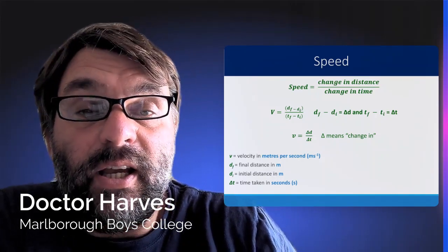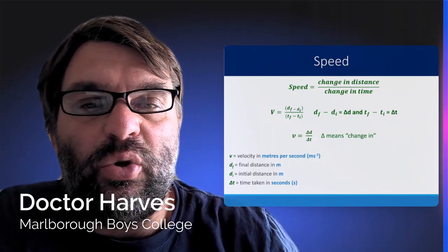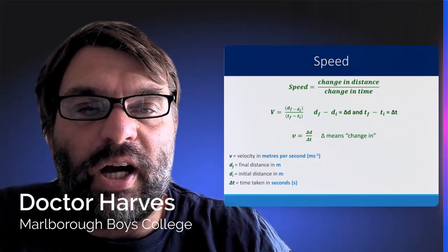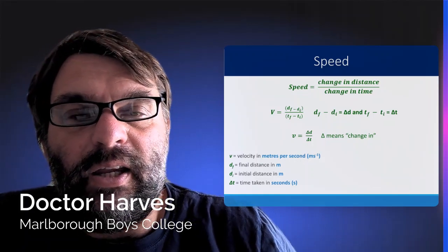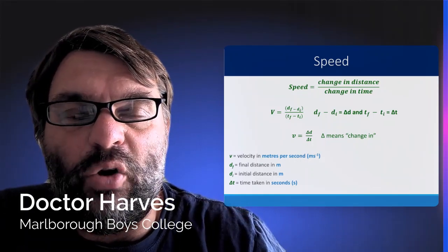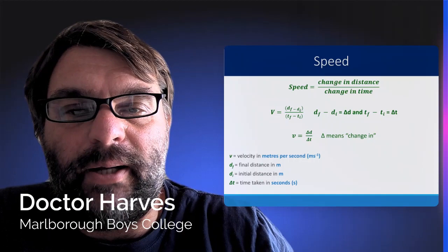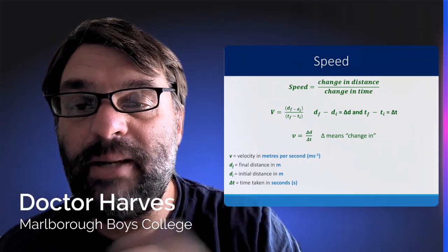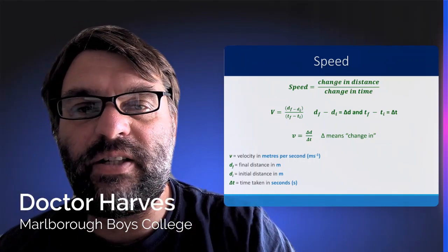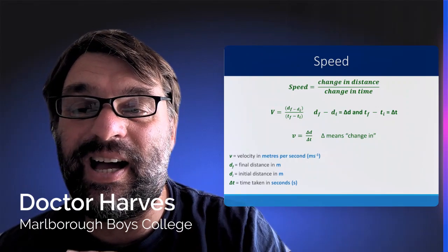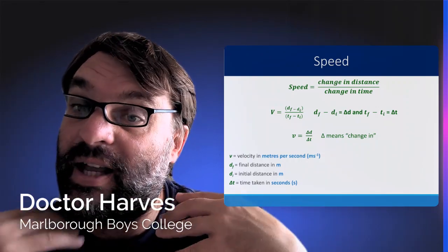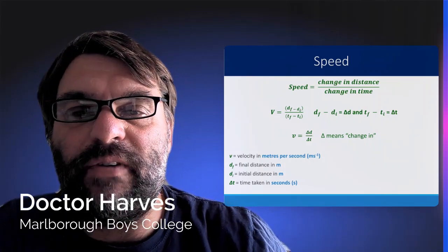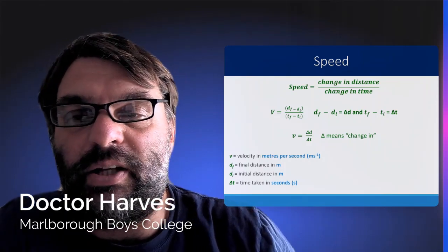And in physics, for change in, we use the symbol delta, that triangle shape, so it means that speed, or v, equals delta d over delta t, where v is velocity. Because in Level 1 Physics, speed and velocity are essentially the same, we use them interchangeably. That changes later when we look at Level 2 and 3 Physics, but for the moment, velocity and speed are the same.